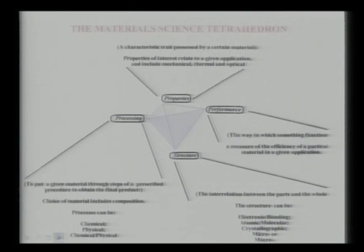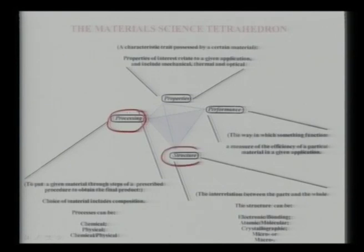The tetrahedron of material science also appears in the prestigious journal Acta Materialia. At the four corners of the tetrahedron are processing, structure, property, and performance. If I change the processing — for example, if I change the sintering temperature or sintering time — that will definitely have a direct influence on the microstructure of the material. If the structure is changed, it will definitely influence properties like hardness, fracture toughness, and strength.